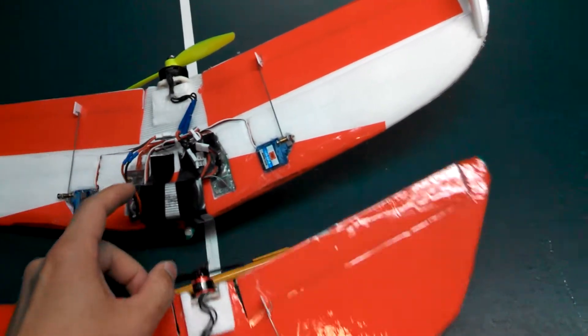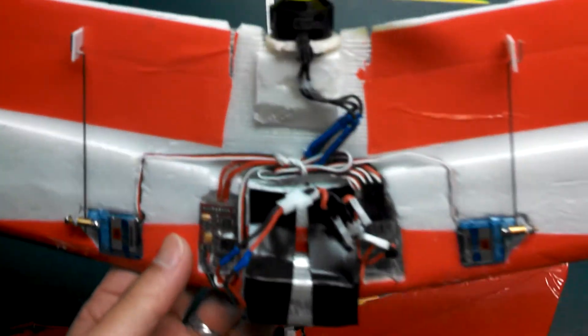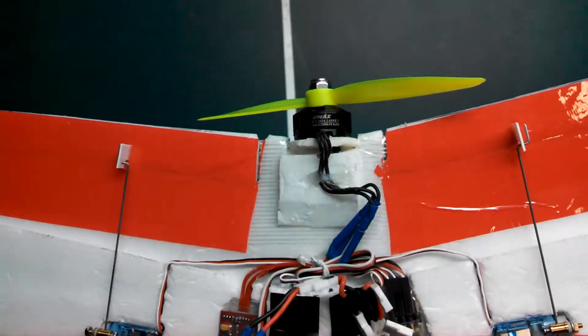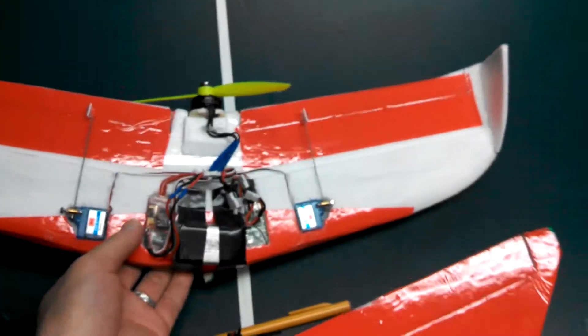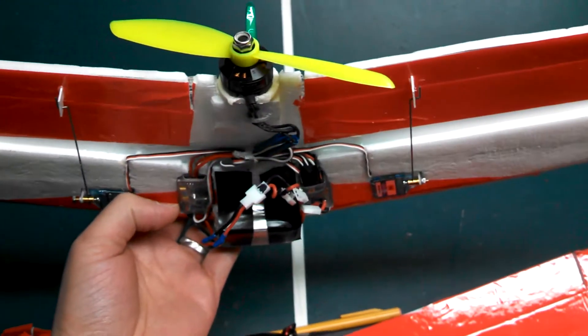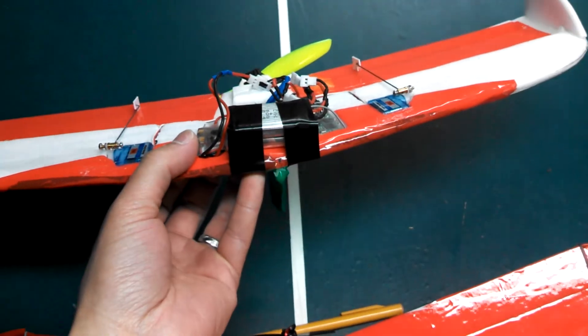The motor for the bigger one is an Emax 1804, 2480 kV, spinning a 5x4.5 prop.